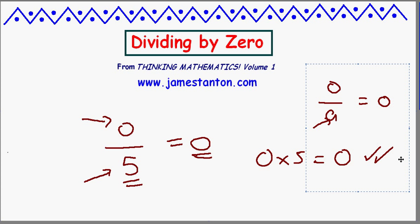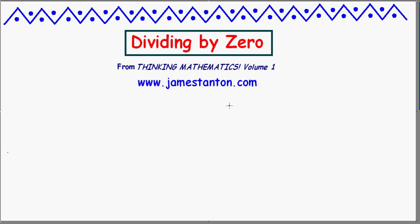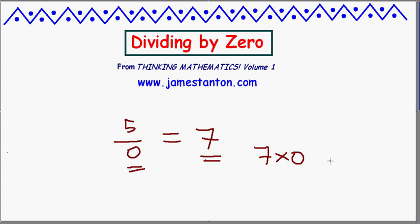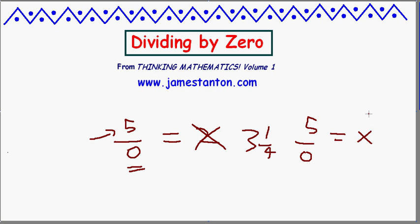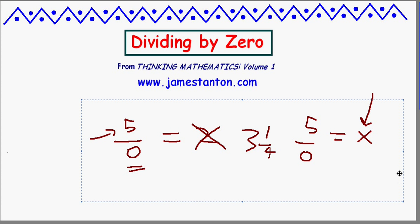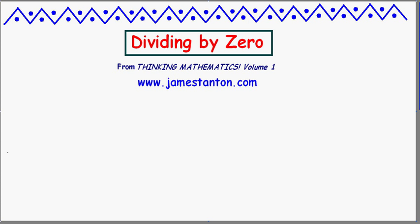Let's use 0 now as a denominator in a fraction problem. Let's consider 5 divided by 0. Suppose someone claimed the answer was 7. I'd have to say they're wrong — it doesn't pass our check. What is 7 times 0? Hopefully it's 5, but it's not. 7 times 0 is 0. This does not pass the check. So 5 divided by 0 is not 7. By the same token, it's not 2 — 2 times 0 is not 5. It's also not 3 and a quarter — 3 and a quarter times 0 is not 5. In fact, you can see dividing 5 by 0 has no possible meaningful result. There is no value for x I can place here such that x times 0 would equal 5. So people say there's no solution to the problem of dividing 5 by 0.